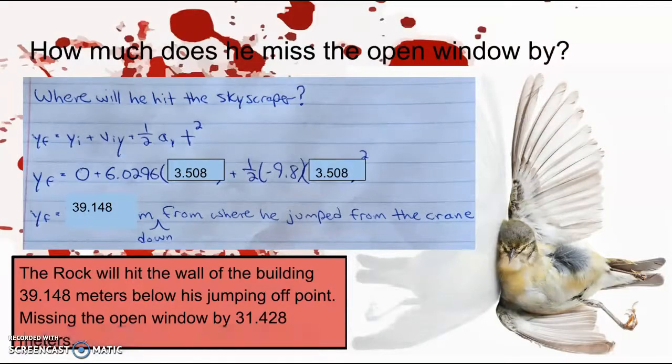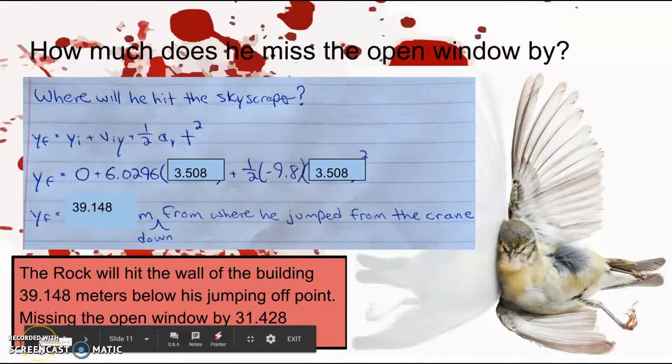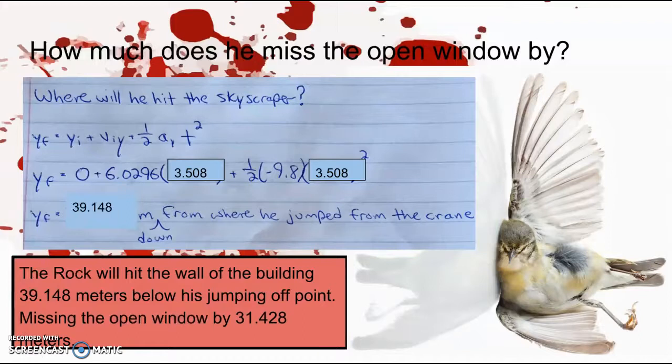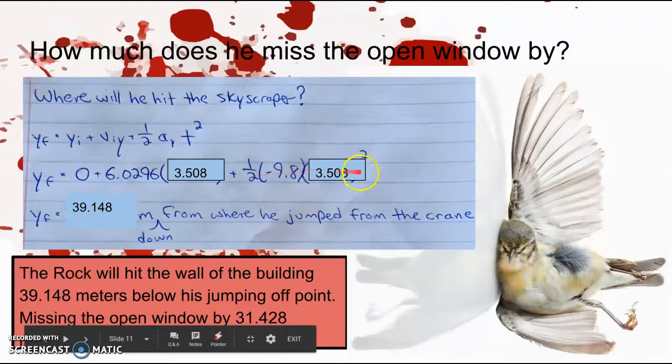After finding the velocity and angle he's going to hit the building, we can now find out the position of how far down he will hit the building. Using the kinematic equation we've learned in class, this gives us the position final equals the initial position plus velocity of the y component times time plus one-half the acceleration of gravity times time squared. This gives us a final position of 39.148 meters. The Rock will hit the wall of the building 39.148 meters below his jumping-off point, missing the open window by 31.428 meters.